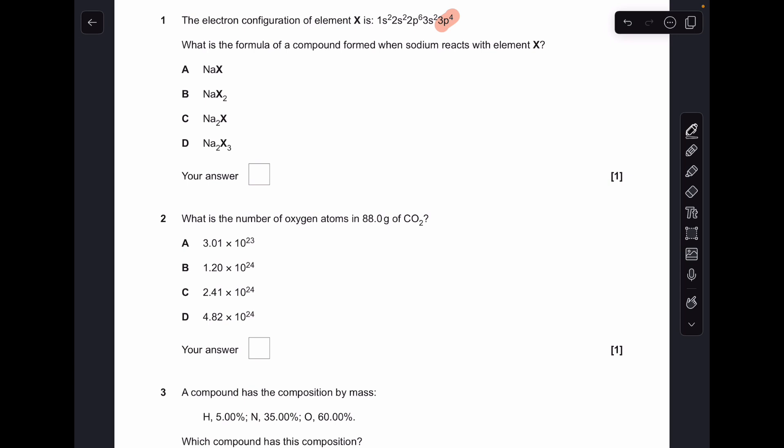So X, you'll notice I've highlighted, has a 3P4 configuration, so that means it's in group 6 of the periodic table, which means its ion will be X2-. Sodium is Na1+, so the ratio will be Na2X, so option C.